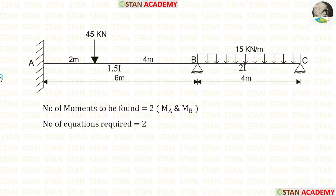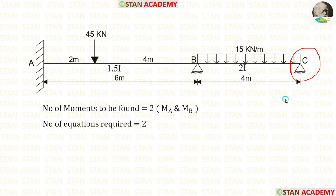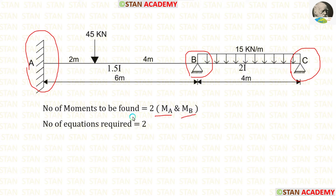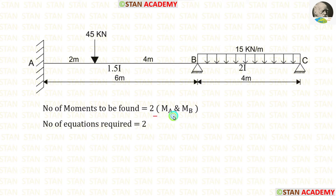Before starting the analysis, let's see the number of moments to be found. At point C, there will be no moment because it is a simply supported end, so MC equals 0. At point A we have moment MA, and at point B we have moment MB, so the number of moments to be found is 2. To calculate these two moments, we need two equations. For making one equation, we need two spans, and using spans AB and BC we can make one equation.